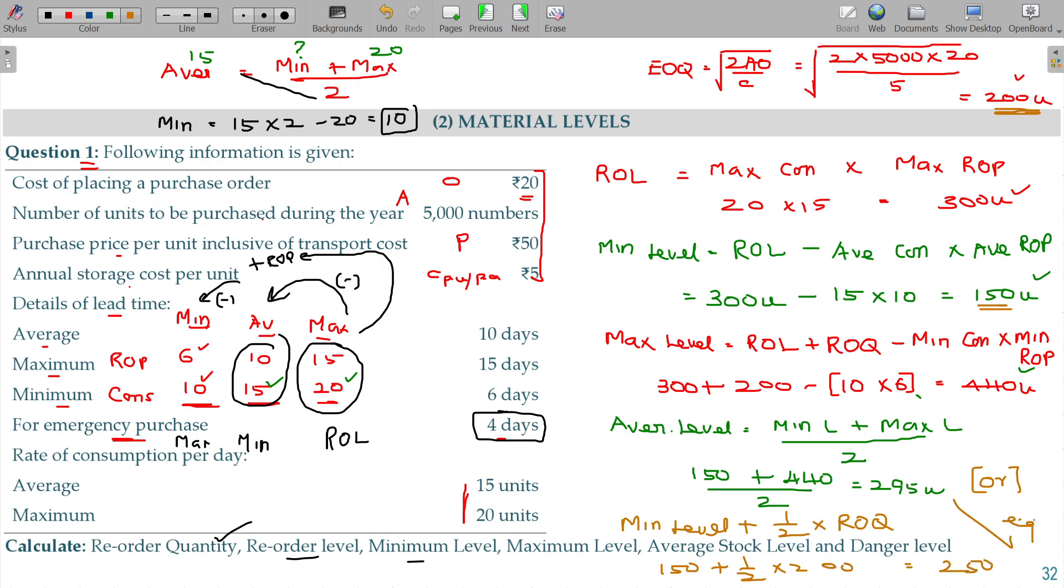Of course these two are not equal. So I have to calculate the danger level. In danger level, average consumption multiplied by reorder period for emergency purchase - 4 days per day, and on average I consume 15 units. In the case of emergency, I can get it by 4th day itself by making some extra arrangement by spending extra amount, whatever it may be. Then the 60 will be called as danger level.